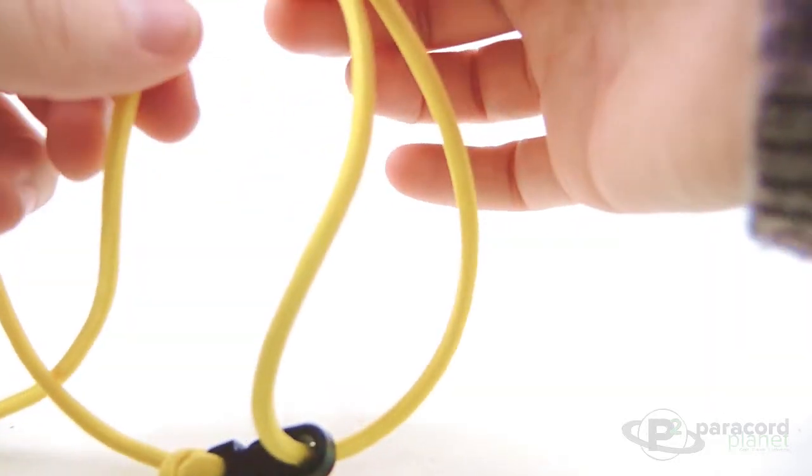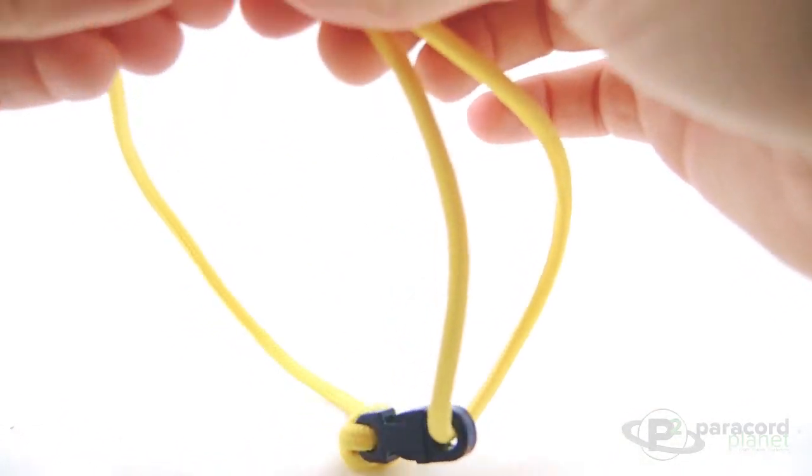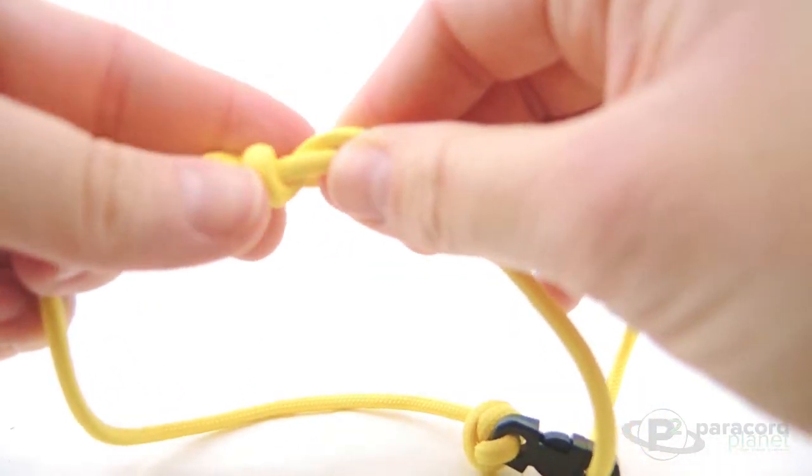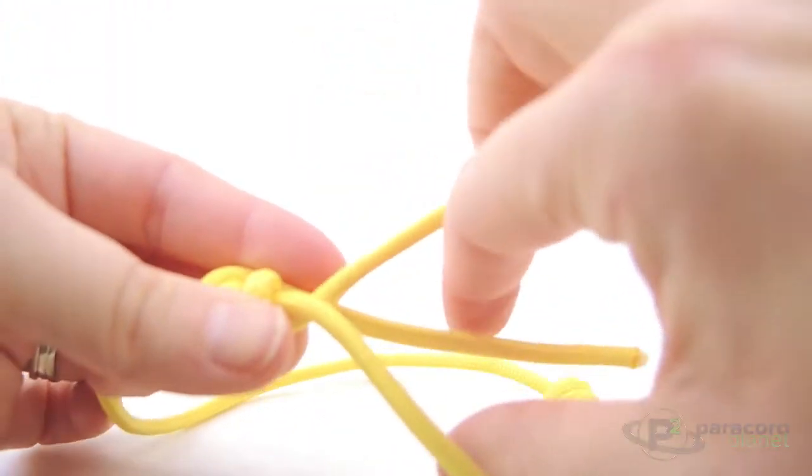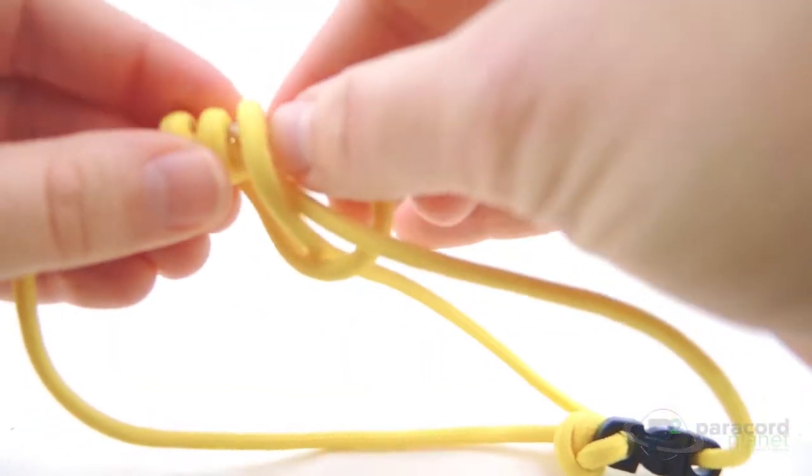Do the loops again around the base of the bracelet. Like I said, I'm still going to do this about three times. Take it through the bottom loop and then up through the three loops that we went around the bracelet.